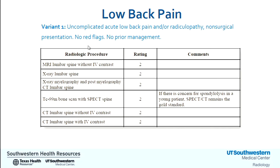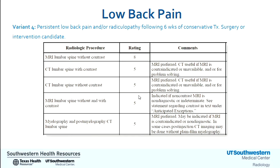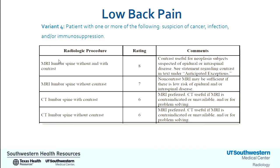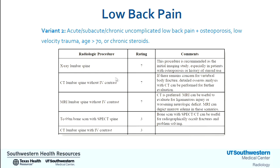What about low back pain? For uncomplicated low back pain with no prior management and no red flags, imaging is not going to be indicated. For patients who fail conservative therapy — the common scenario of people with chronic back pain who might be candidates for intervention — you need an MRI without contrast, as contrast doesn't add much in that evaluation. For patients with systemic diseases, you want an MRI with contrast to look for tumor or epidural disease. If you're worried about a compression fracture, plain films are usually a good start.